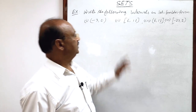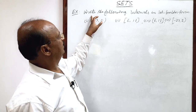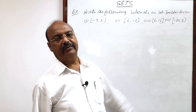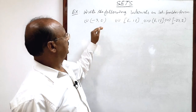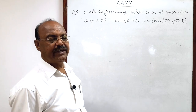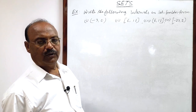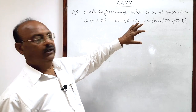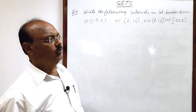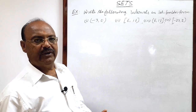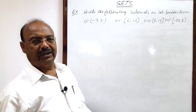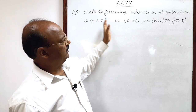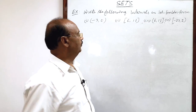Welcome students. In this question from the chapter Sets, we have to write the following intervals in set builder form. This given form is known as tabular form or roster form, in which all the elements are clearly mentioned. But in set builder form, we will mention the set symbolically with the help of unknown number x. So let us write down the intervals in set builder form.